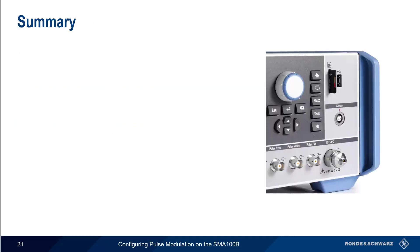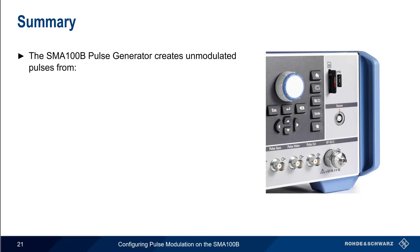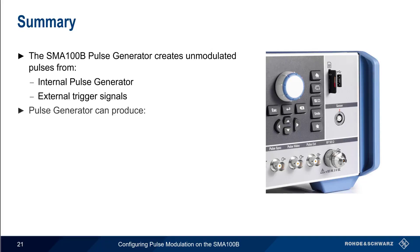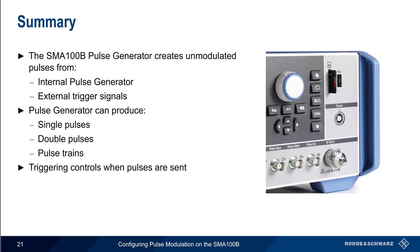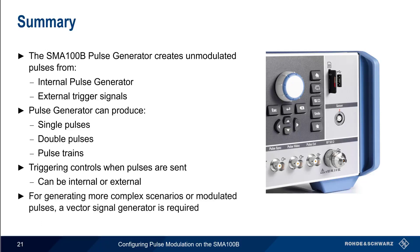So let's summarize what we've covered. The SMA-100B can generate unmodulated pulses using either its internal pulse generator or external trigger signals. The internal pulse generator can produce pulses as single pulses, double pulses or pulse pairs, and pulse trains, which are sequences of pulses having independent on-off times. Triggering controls whether pulses are transmitted once, continuously, or for a defined period of time, and triggering can also be either internal or external. Lastly, remember that the SMA-100B is an analog signal generator, which generates unmodulated pulses only. For more complex scenarios or modulated pulses, a vector signal generator would be required.